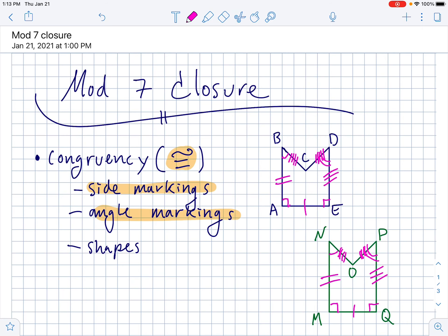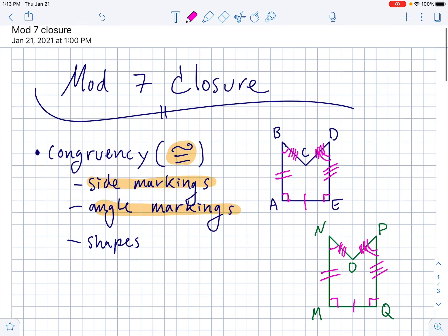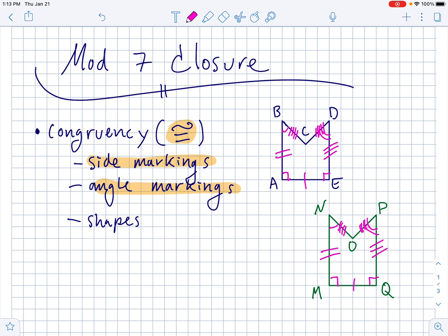So, if all the sides and all the interior angles are congruent to each other, then the two shapes are congruent. Notice that the order of the letters matters. So, you can go in any order you want, but you have to go in the same order in the second diagram as well.